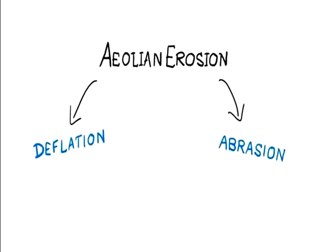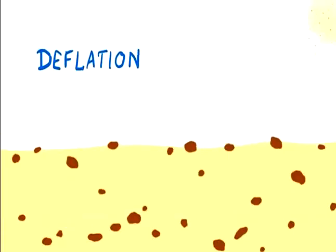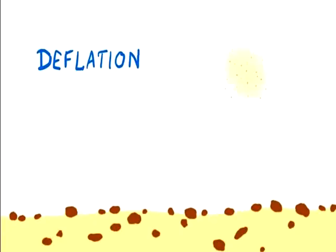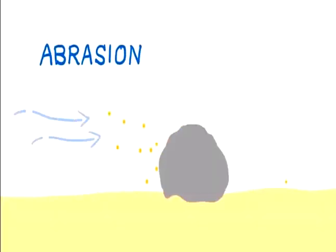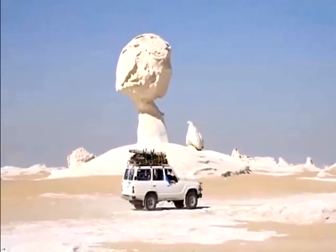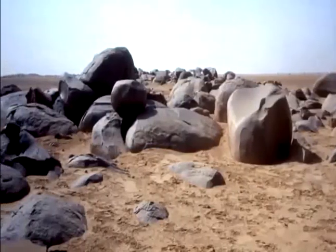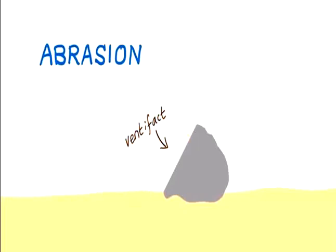Deflation happens when fine loose sediment is picked up and carried away by the wind. Arid landscapes are very vulnerable to this as they lack any moisture or vegetation to hold the soil and sand together. Any rocks remaining in the sand will be left behind to form a desert pavement. Abrasion happens when material carried in the wind is blasted at rock surfaces, causing them to wear away. Abrasion is most effective up to 1.5 meters from the ground, and rocks that have flat sides due to abrasion are called ventifacts.